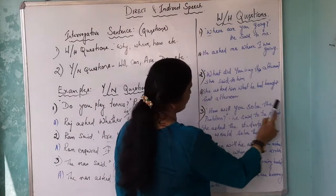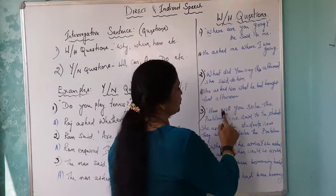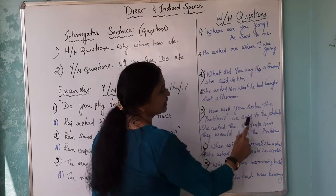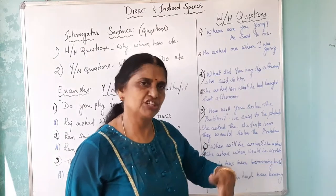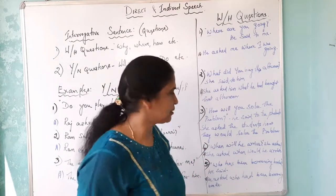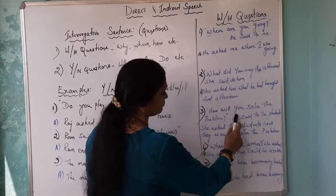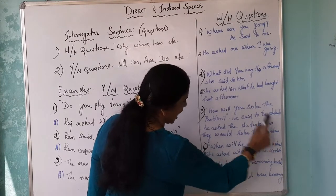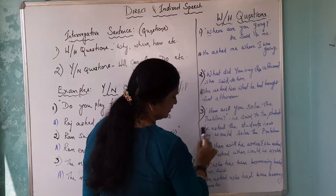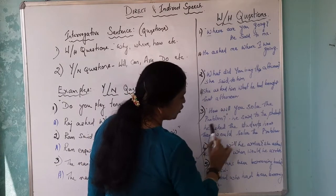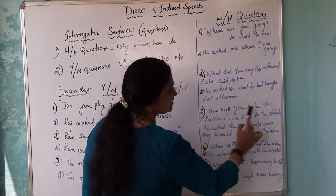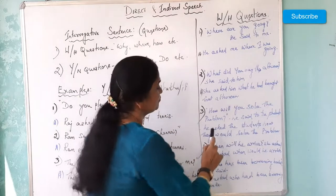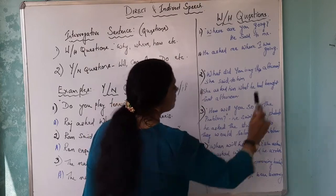Third example: 'How will you solve the problem?' He said to the students. 'Will' is changed to 'would.' The subject 'you' becomes 'they' because 'students' is plural. After the WH word 'how,' you place the subject. So: 'He asked the students how they would solve the problem.'